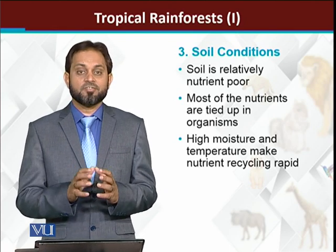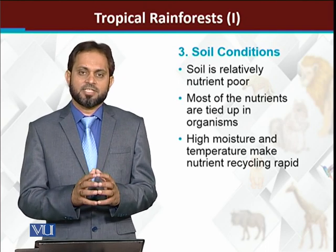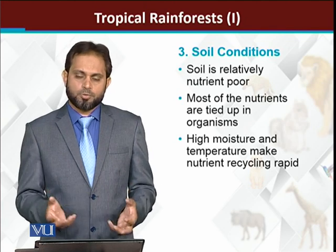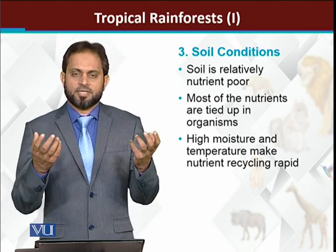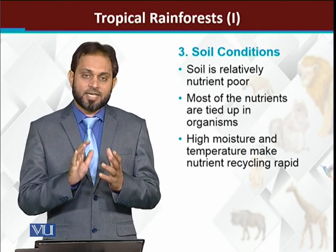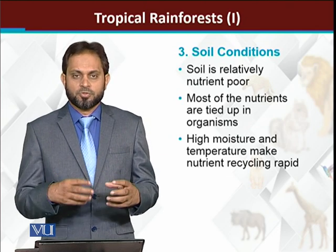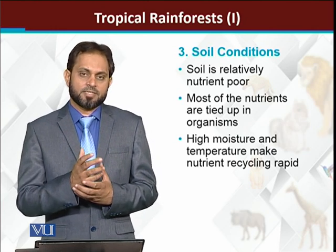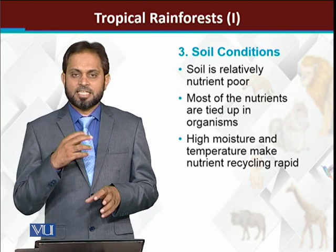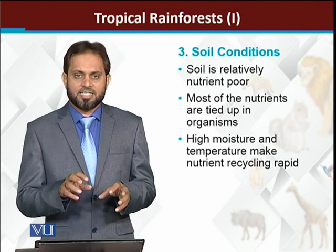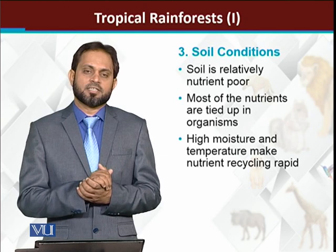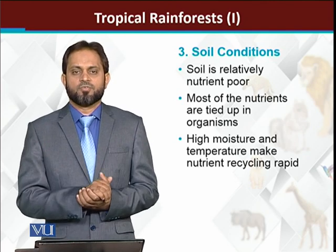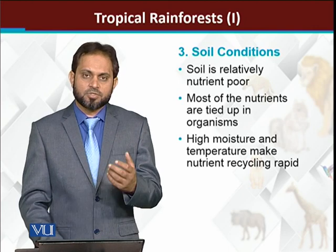Soil is relatively nutrient poor. However, soil biomass may be very high, so plants grow tall. When these plants die, the decomposition process is very quick and very rapid due to temperature and humidity. Decomposers are also very active in the tropical forest, so as decomposition occurs, that matter is used by plants for further biomass synthesis.